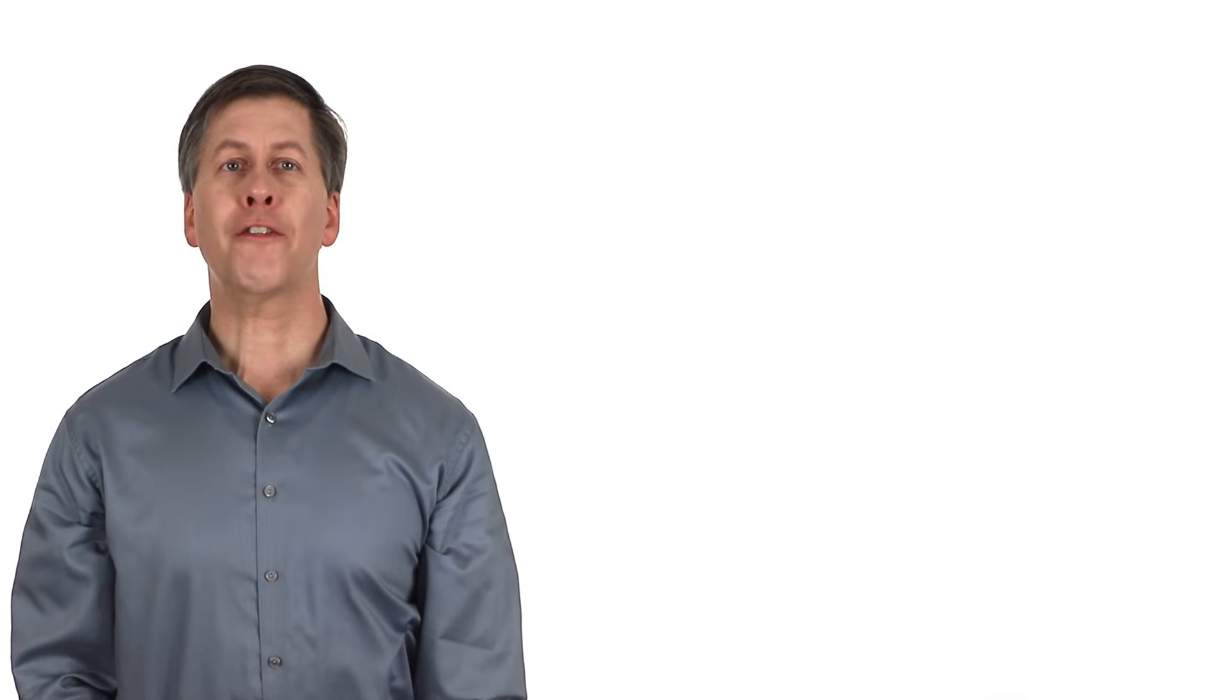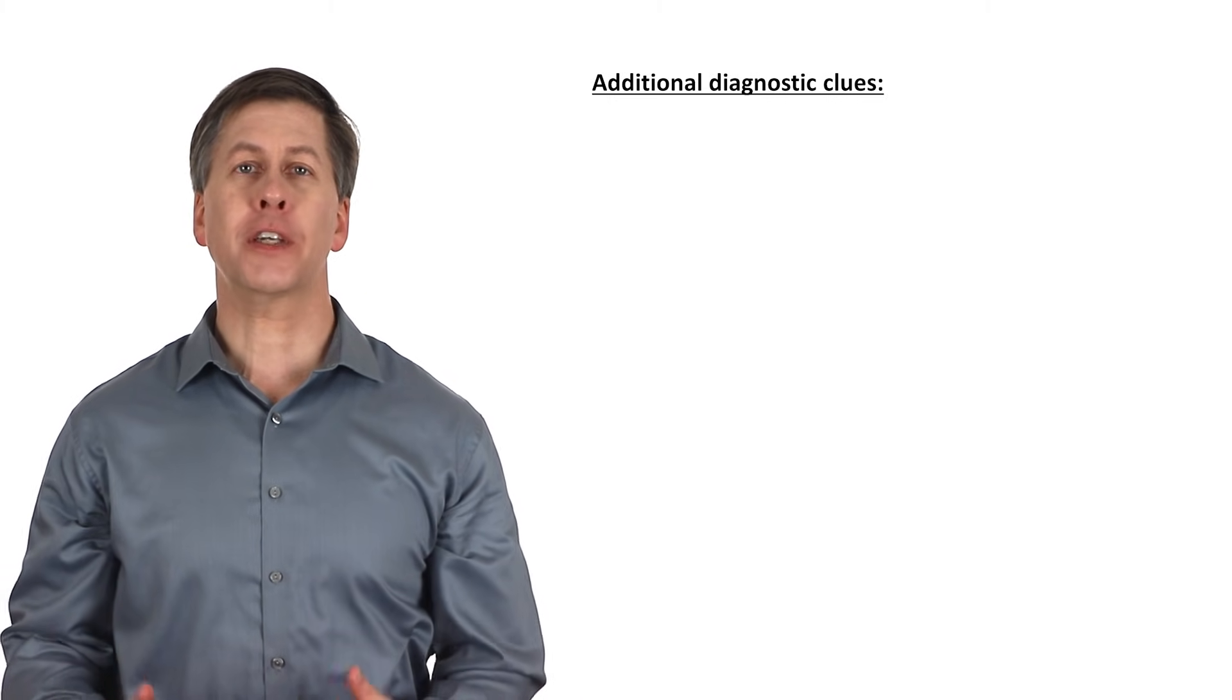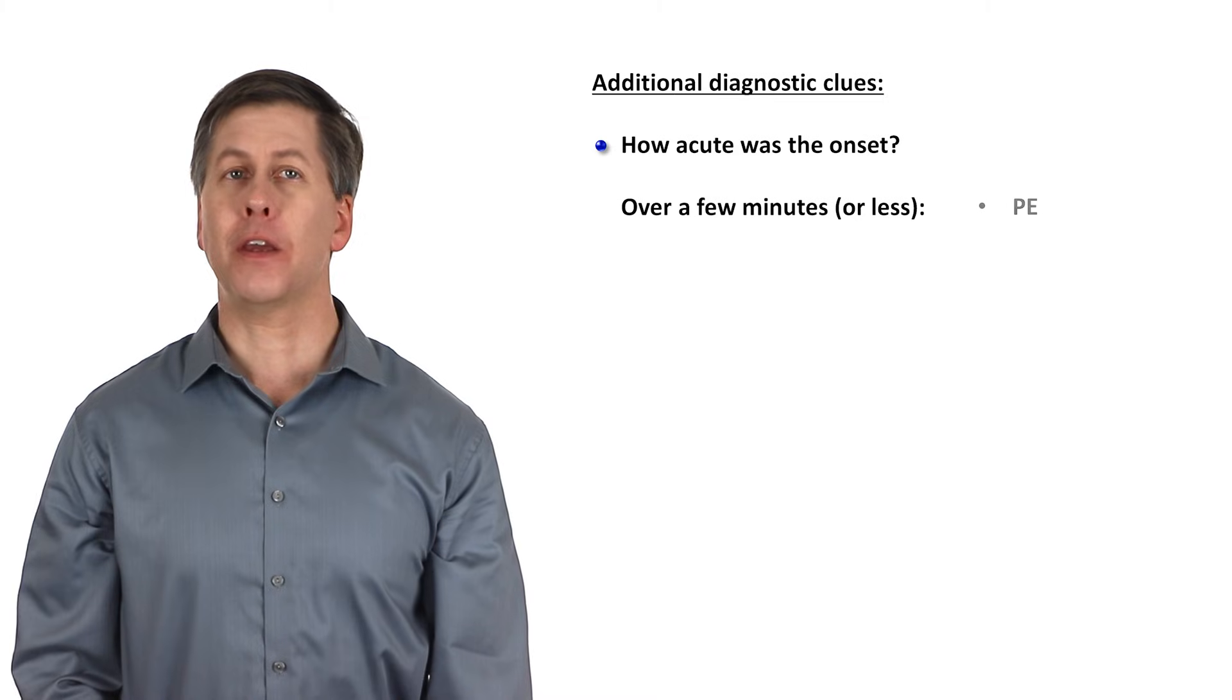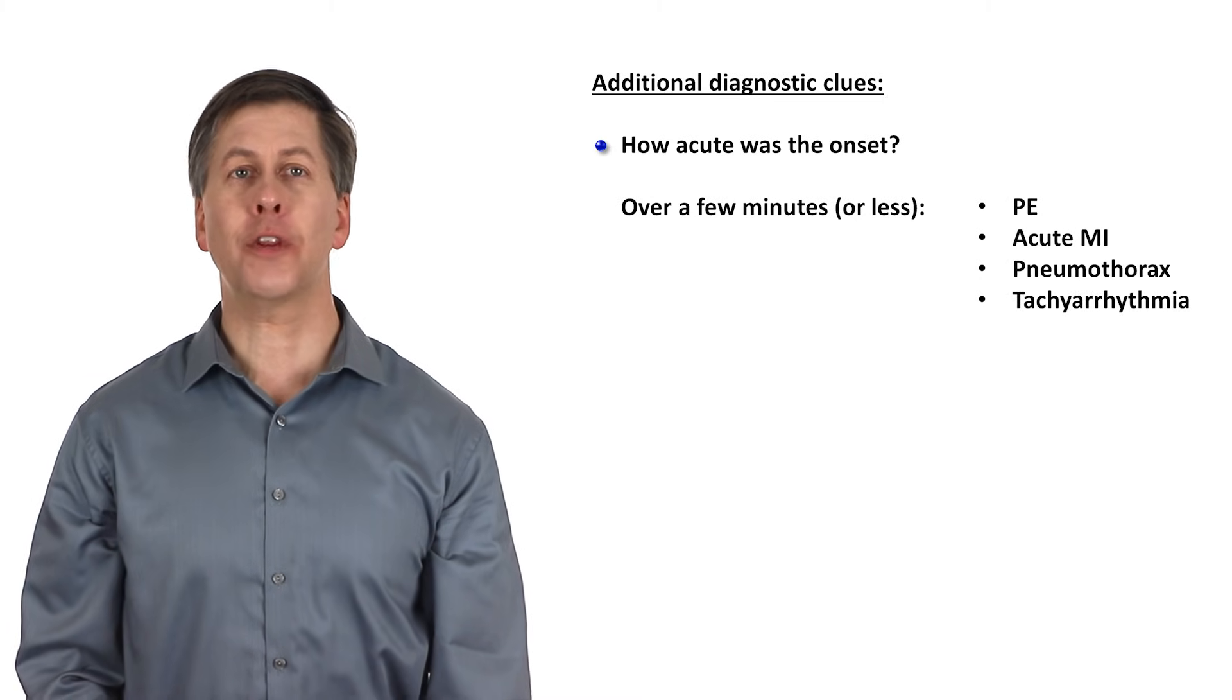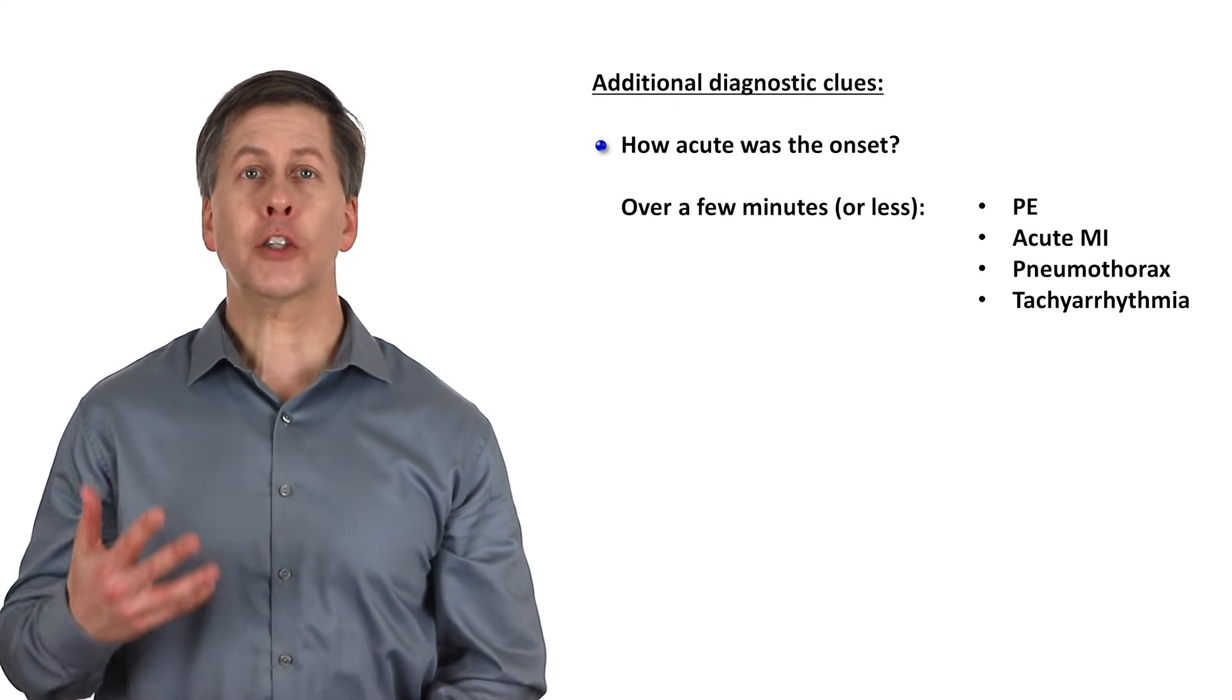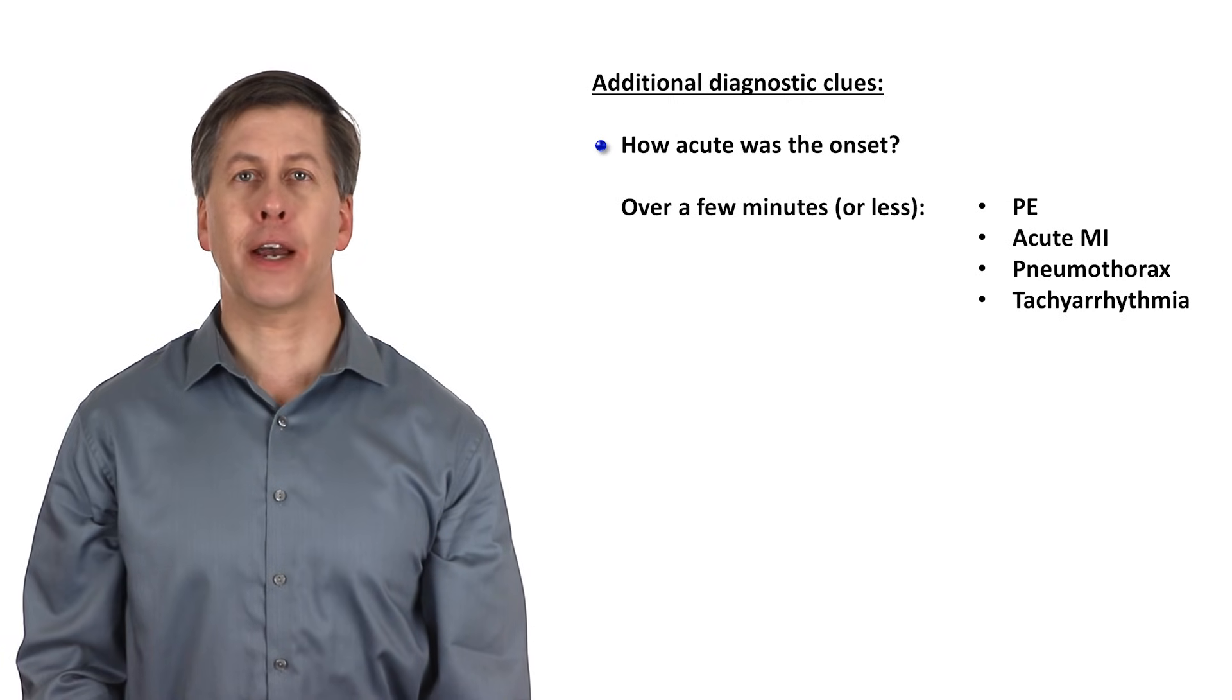Beyond the algorithm, there are a few other clues to think about when trying to determine the etiology of acute dyspnea. The first is precisely how acute its onset really was. If the onset was over just a few minutes, I would be thinking a PE, acute MI, or a pneumothorax. A tachyarrhythmia leading to the very abrupt onset of cardiogenic pulmonary edema would be another consideration. Coincidentally, these are also the handful of diagnoses most likely to be associated with chest pain, though pain can also be seen with pneumonia and asthma attacks too.